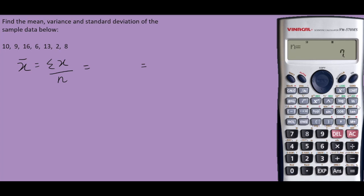So overall we have 7 data, just divided by 7. To find the sample mean, we simply select shift 2, and we select 1 for the sample mean. The sample mean is 9.1429.